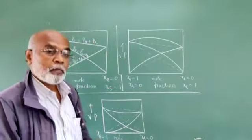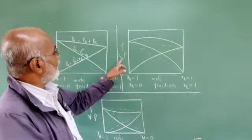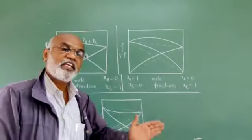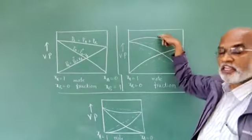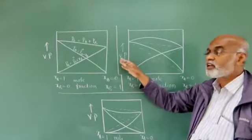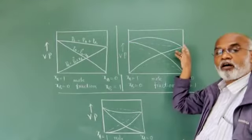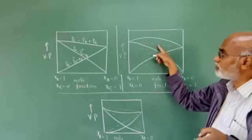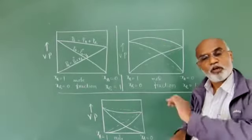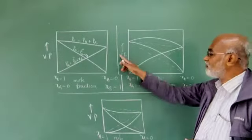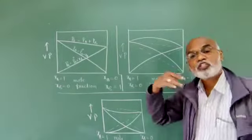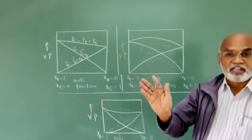Practically, when we determine and plot a graph of vapor pressure versus mole fraction, the observed vapor pressure is always more when compared to the theoretically expected vapor pressure from Raoult's Law. As a result, a graph of vapor pressure versus mole fraction shows a maxima. We say that this binary liquid mixture, which is not obeying Raoult's Law, is showing positive deviation.